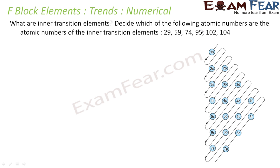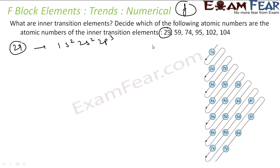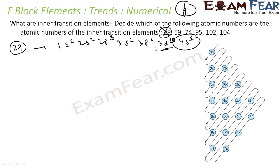What are inner transition metals? The last electron enters the f orbital in inner transition metals. To determine whether an element is an inner transition metal, we write its electronic configuration. For element 29 (copper): 1s2 2s2 2p6 3s2 3p6 3d10 4s1 — the last electron enters the d orbital, so copper is a d-block element, not an f-block element.